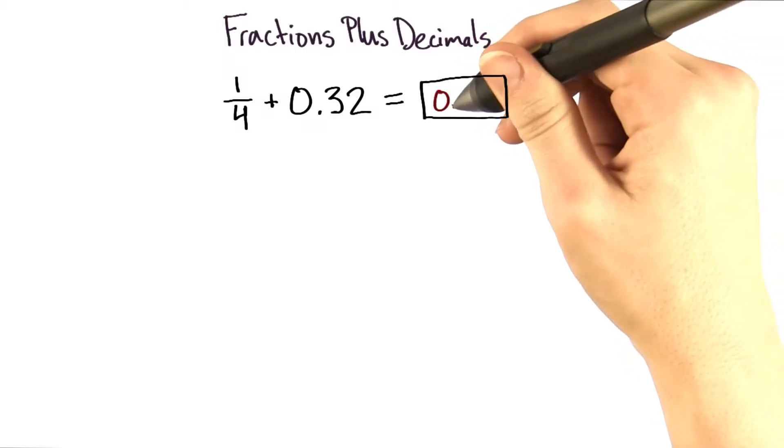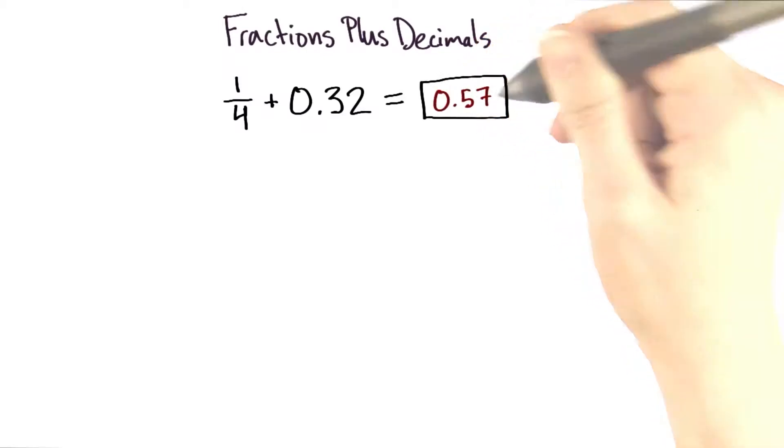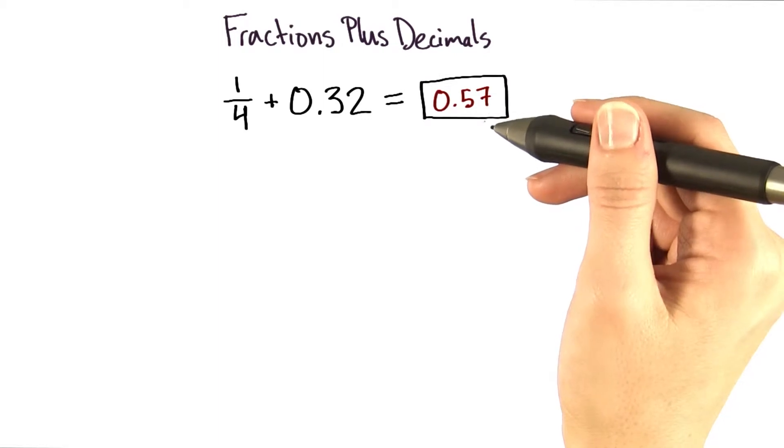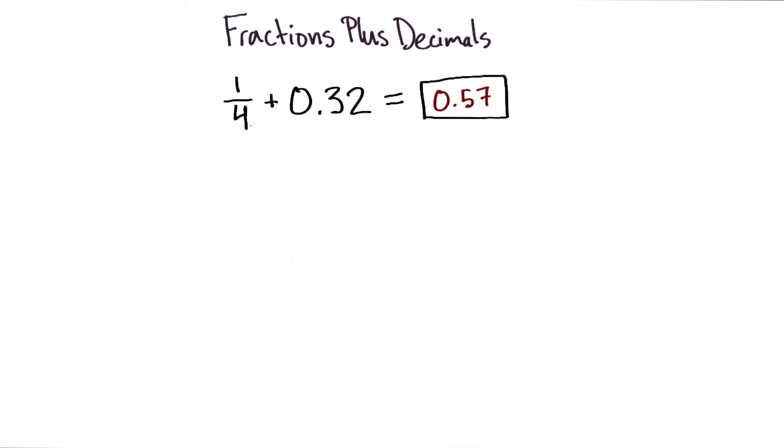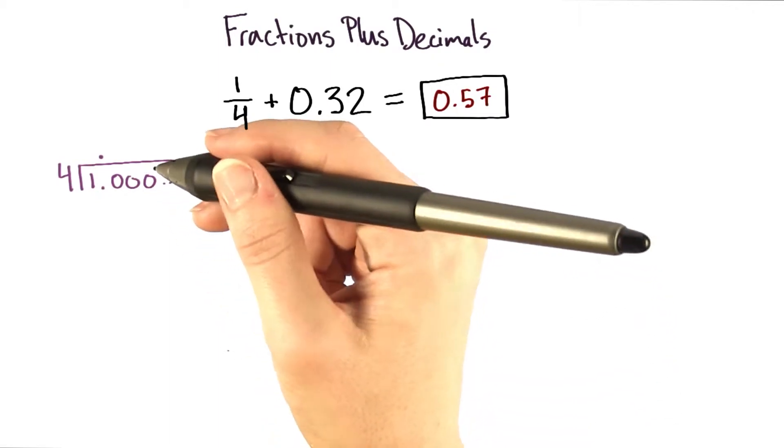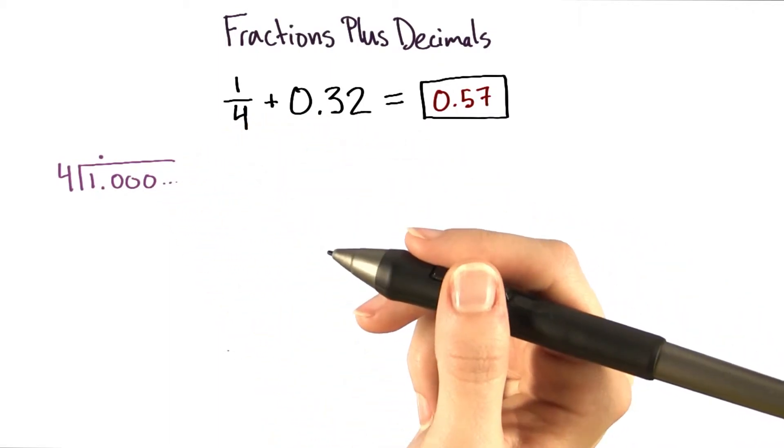The answer here is 0.57. In order to get this answer, the first thing that we should do is convert 1 fourth into a decimal. Let's use our regular procedure for turning a fraction into a decimal.